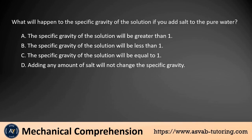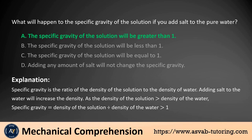What will happen to the specific gravity of the solution if you add salt to pure water? A. The specific gravity of the solution will be greater than 1. B. The specific gravity will be less than 1. C. The specific gravity will be equal to 1. D. Adding any amount of salt will not change the specific gravity. The answer is A. Specific gravity is the ratio of the density of the solution to the density of water. Adding salt increases the density, so specific gravity equals density of solution divided by density of water, which is greater than 1.